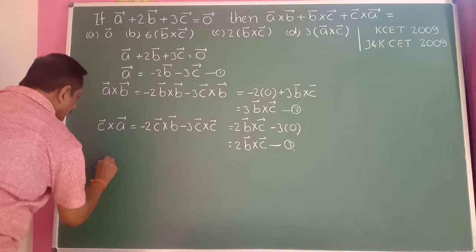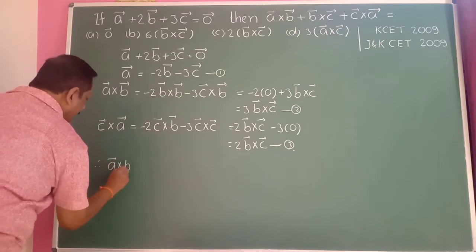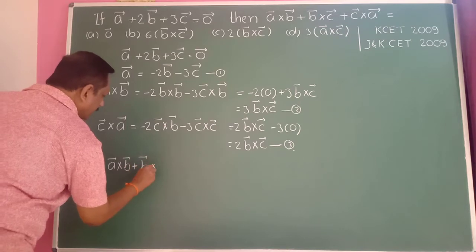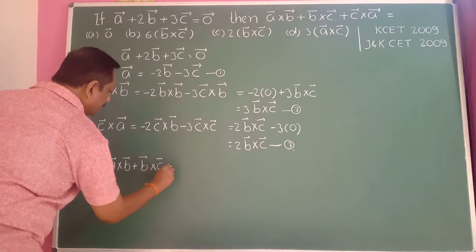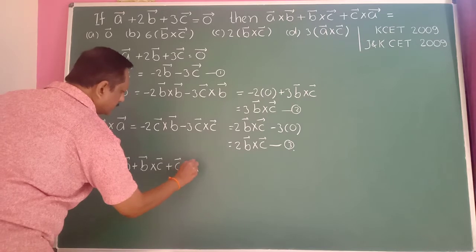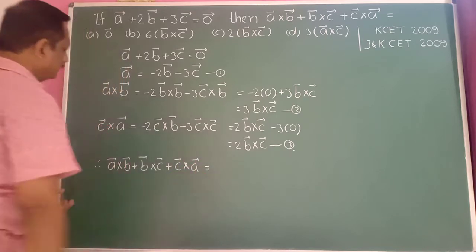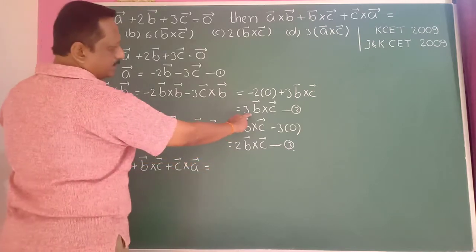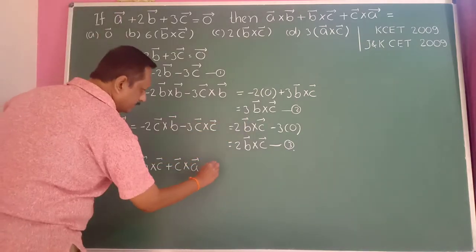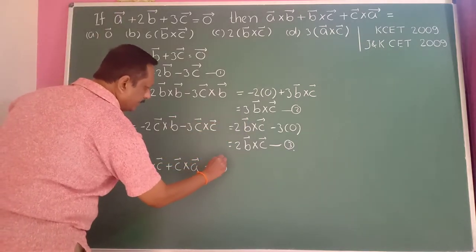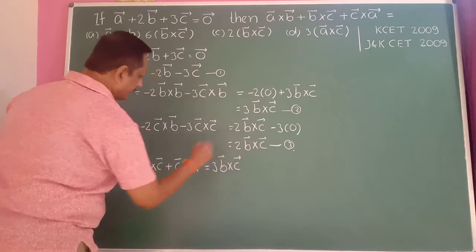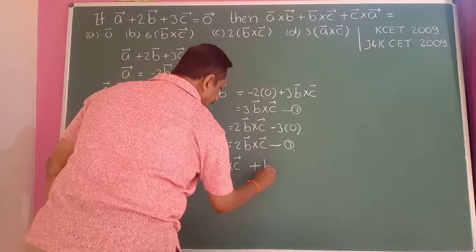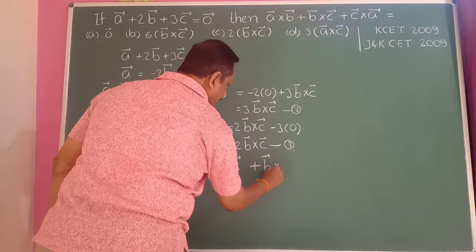Now combining the results: a-bar cross b-bar plus b-bar cross c-bar plus c-bar cross a-bar.